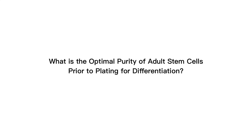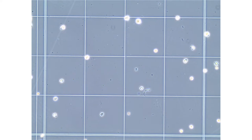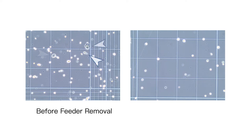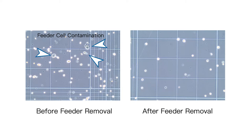When seeding adult stem cells into transwell inserts for differentiation, the purity and density of the cells helps dictate the speed and robustness of differentiation. The image on the screen shows the optimal purity of adult stem cells prior to plating. To achieve this purity, it is recommended to run the expanded harvested adult stem cells through an irradiated fibroblast removal protocol. Clusters of two to three cells are often observed; when determining cell density, these clusters can be counted as one cell.